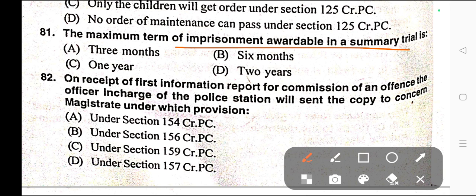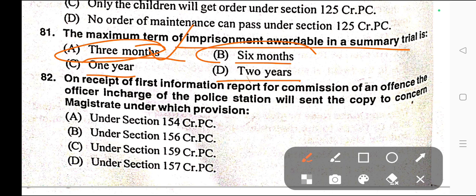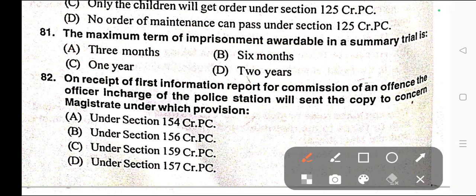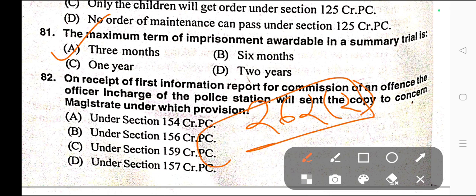Question number eighty-one: The maximum term of imprisonment available in summary trial is — A) 3 months, B) 6 months, C) One year, D) 2 years. Correct answer is option A — 3 months. Section 262 Clause 2 of CrPC provides that no sentence of imprisonment for a term exceeding three months shall be passed in any case of summary trials.